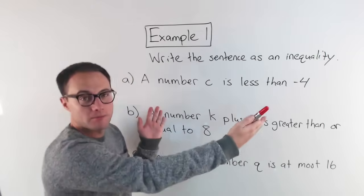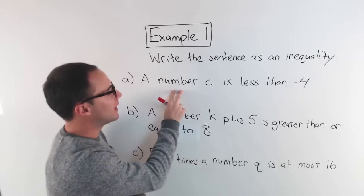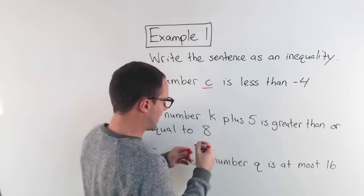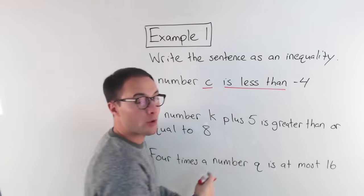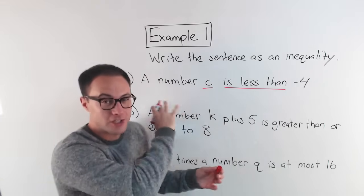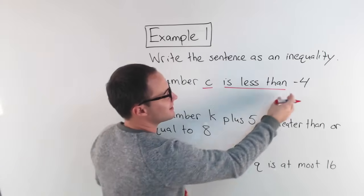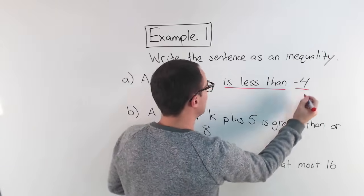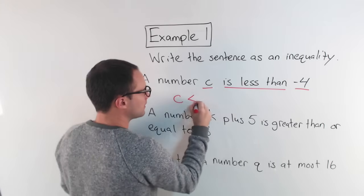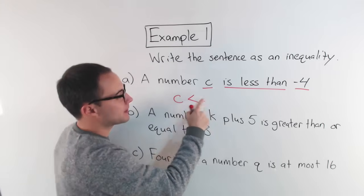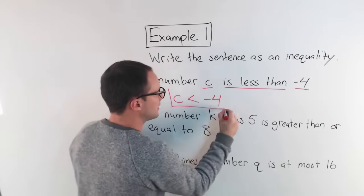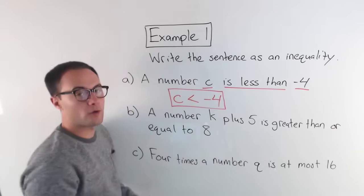Let's read them just left to right like normal. On number A: C is less than negative 4. So C is less than — that symbol looks like this — negative 4. C is less than negative 4.